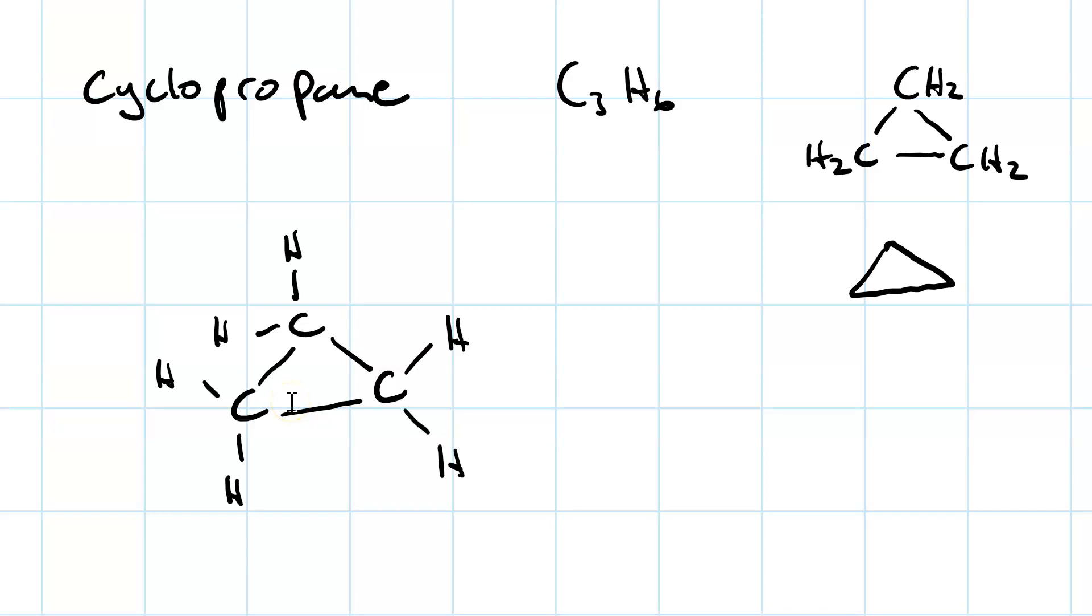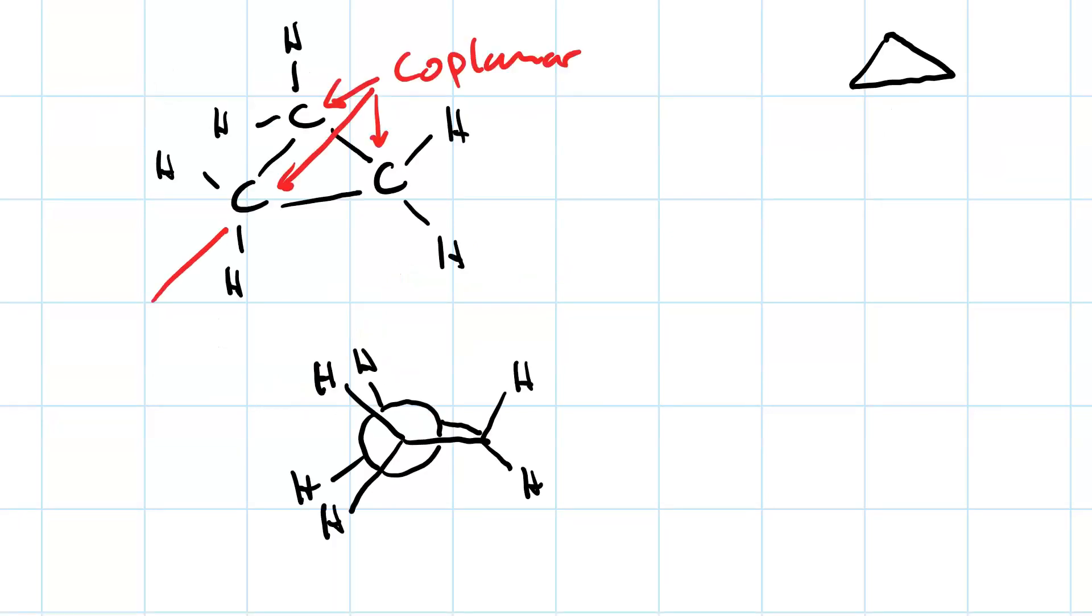Here's cyclopropane drawn with all atoms shown. What's interesting is that since there are three atoms, they are necessarily coplanar. But this creates significant challenges. If we make a Newman projection looking down one of the bonds, we see that the hydrogens are eclipsed.